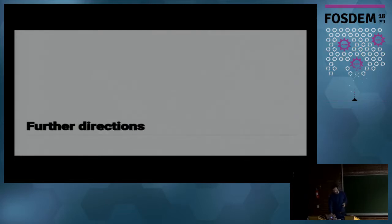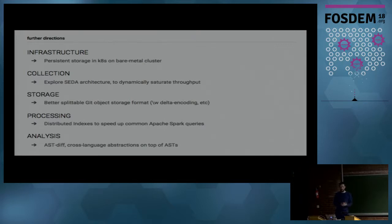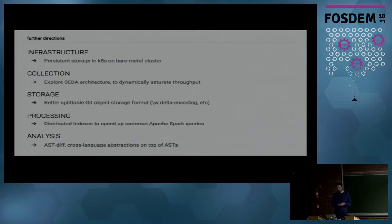That was a high-level overview. There are some future things we want to get done. On the Kubernetes side, persistent storage on a bare-metal cluster is not easy to make. On the collection side, we're looking at staged event-driven architectures — a concept from a Google paper — about making a scalable system that dynamically saturates resources by having queues between the stages, which is very interesting if you want to clone 100 million repositories. On the processing side, we're looking into adding distributed indexes to speed up Apache Spark queries. On the analysis side, there are advanced things like diffing abstract syntax trees and extracting cross-language information from abstract syntax trees, which we're exploring in the Babelfish project.